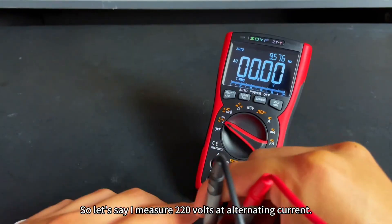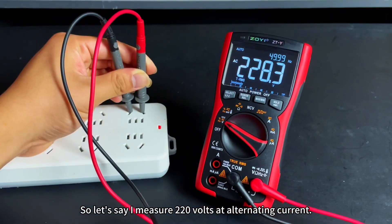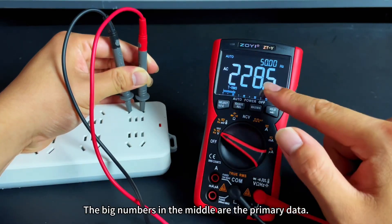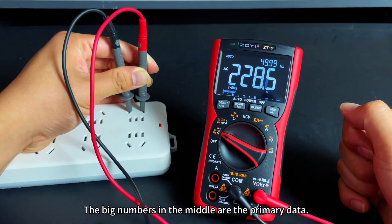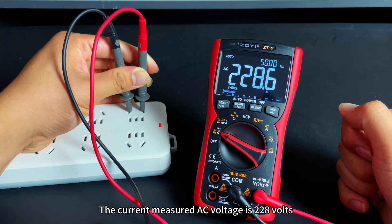For example, when I measure 220 volts of alternating current, the big numbers in the middle are the primary data. It means the current measured AC voltage is 228 volts.